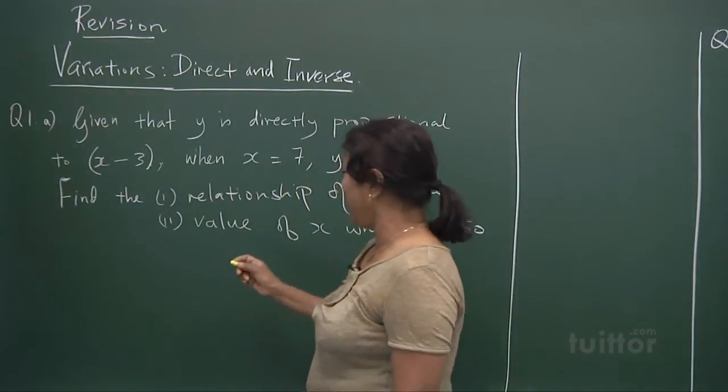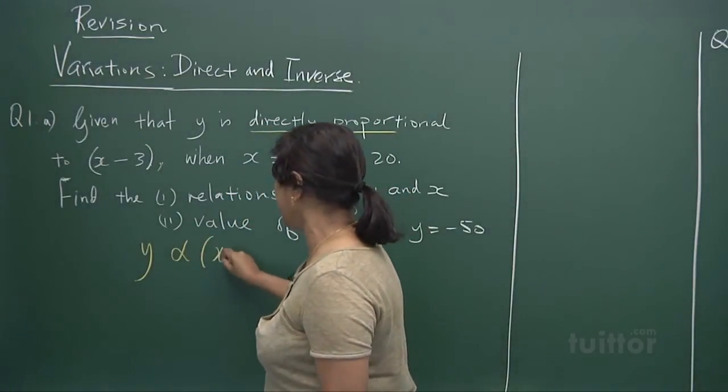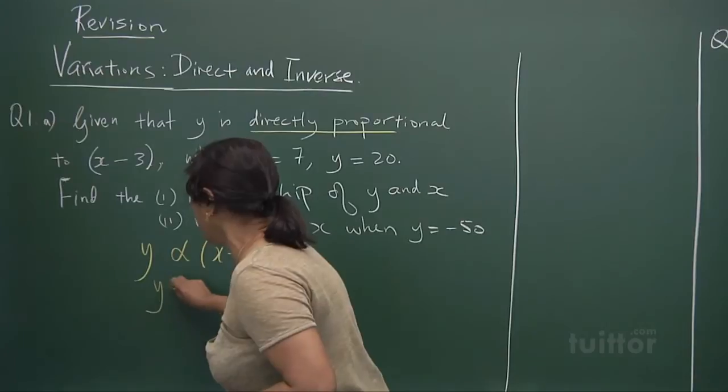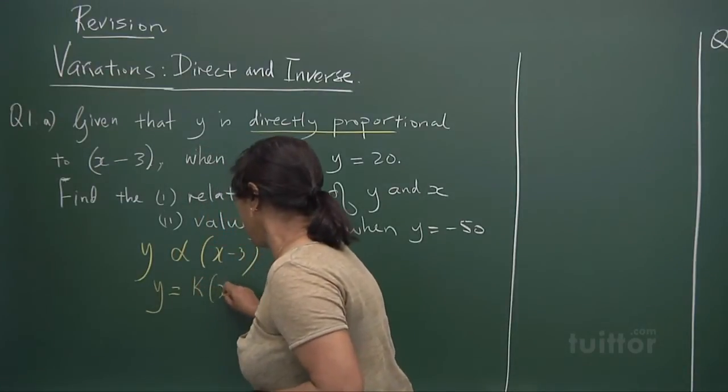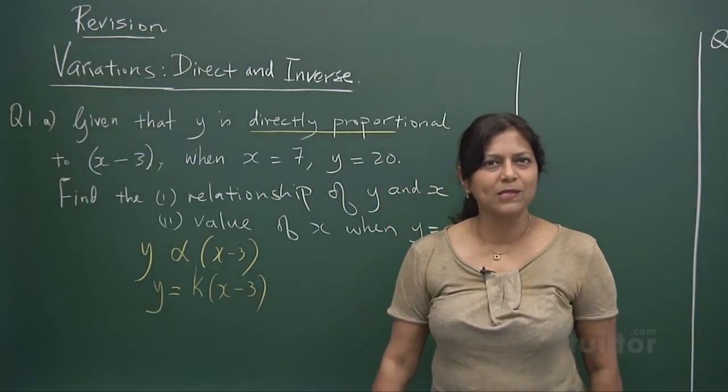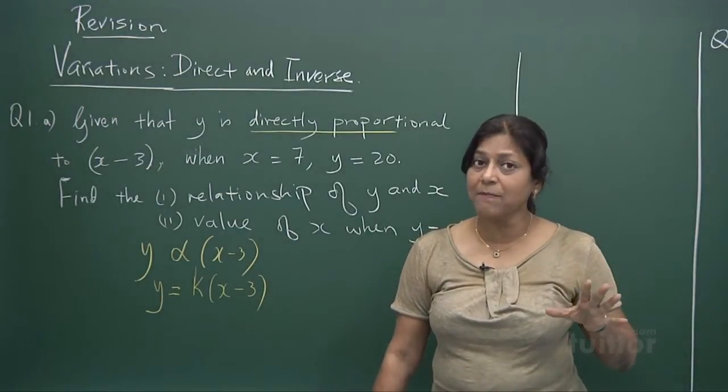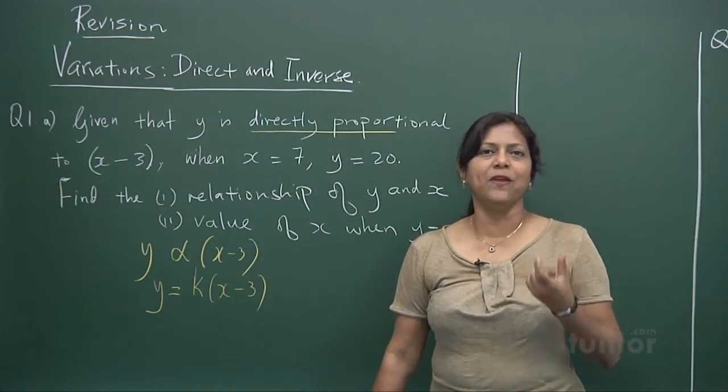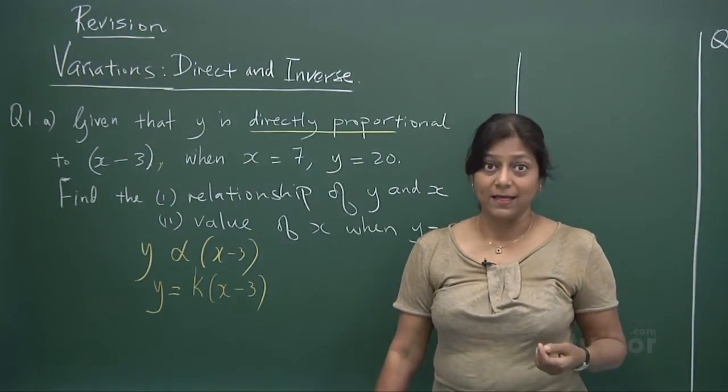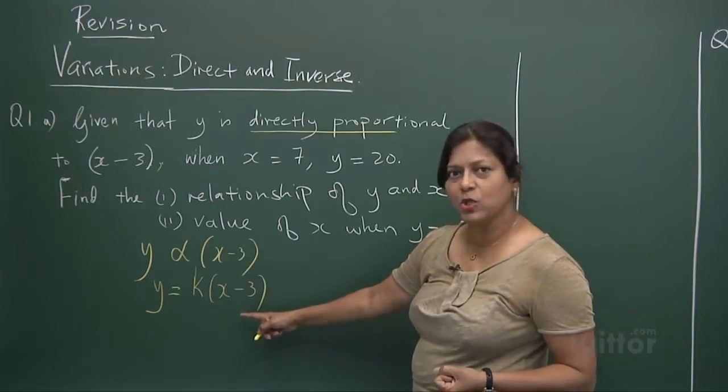Now what do you write? Y varies directly, so you see the word directly? So you put here (x - 3). You now want to form an equation, so you introduce a constant, that is k. y equals to k(x - 3), a small k. So you need to find out what is this constant.